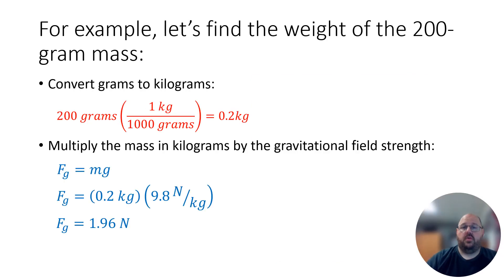Let's do a quick example. Suppose you pull out the 200 gram mass. Your first move is to convert that mass to kilograms — there are 1,000 grams in a kilogram, so divide 200 by 1,000 to get 0.2 kilograms. Anytime you have a mass in physics, convert it to kilograms, as that is the base SI unit. Then to find the weight, multiply 0.2 kg by the gravitational field strength of 9.8 newtons per kilogram, and you get a weight of 1.96 newtons. Newtons is our unit for force, named after Isaac Newton.